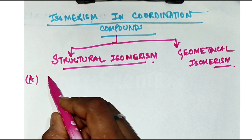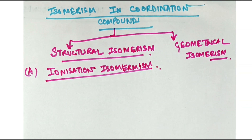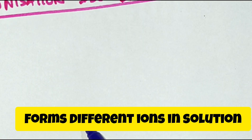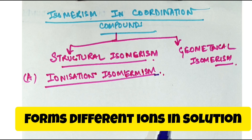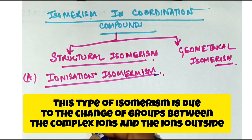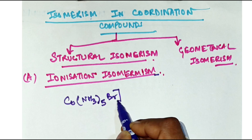The first one is ionization isomerism. In ionization isomerism, different ions are formed in solution although the compounds have the same composition. This type of isomerism is due to the change of groups between the complex ion and the ions outside the coordination sphere. For example, take [Co(NH₃)₅Br]SO₄.